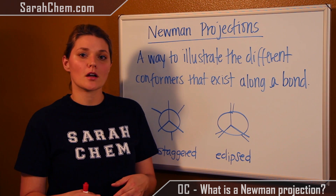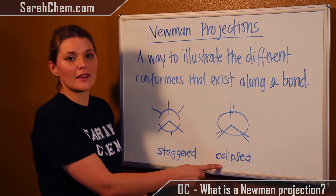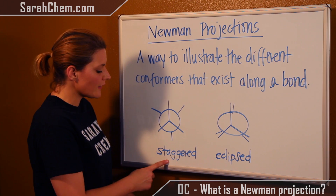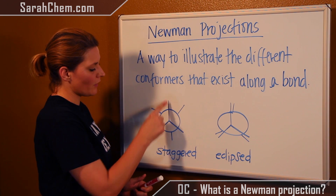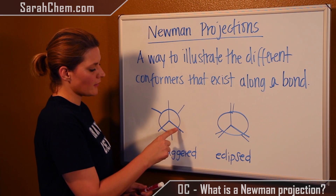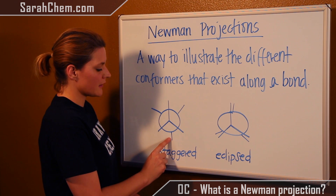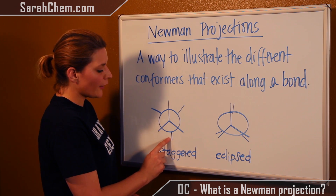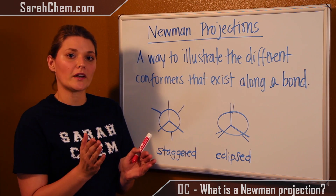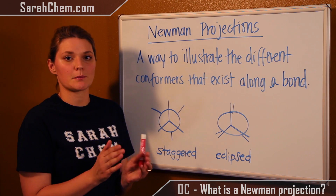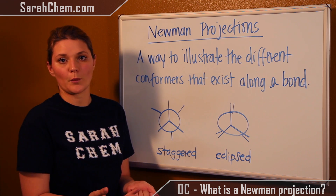There are two primary conformers that we'll look at: the staggered conformer and the eclipsed conformer. In the staggered conformer, you're looking at a carbon with its three bonds, and then directly behind it is another carbon with its three bonds. In the staggered case, the bonds of each carbon are as far apart from one another as possible. This is going to be the most stable conformer that we can have.